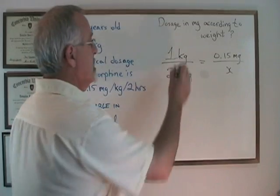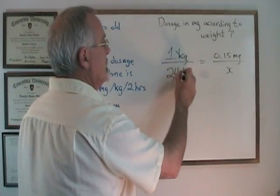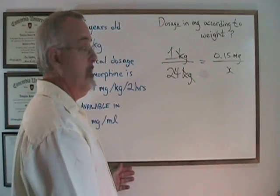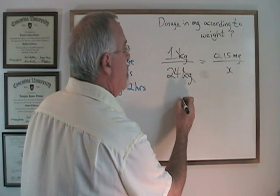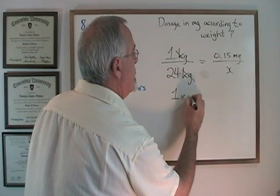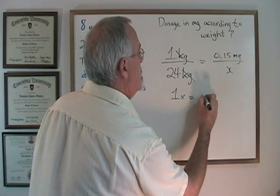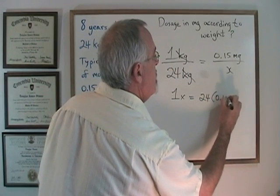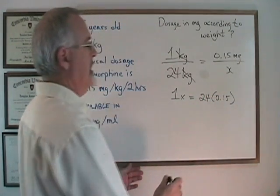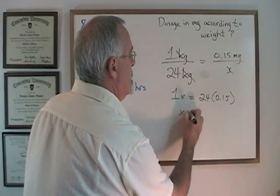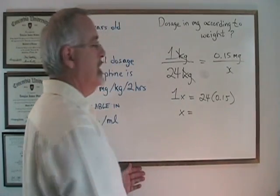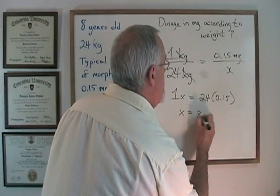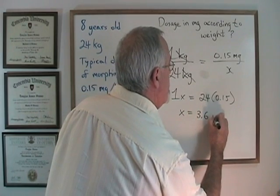The kilograms cancel on the left side, which means our answer is going to be in milligrams. Cross-multiplying, 1x equals 24 times 0.15. x is therefore equal to 24 times 0.15, which is 3.6 milligrams.